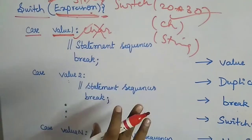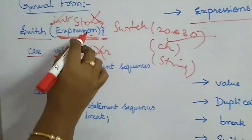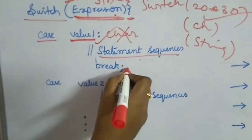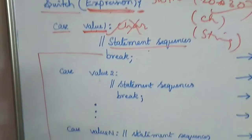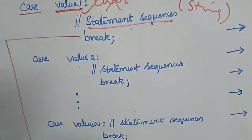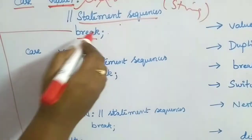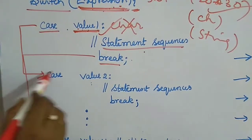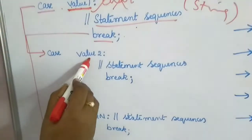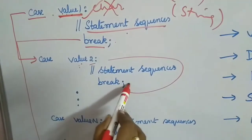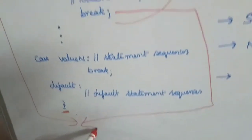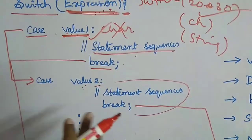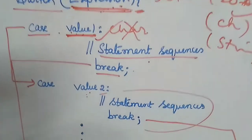Whatever expression you pass, it is matched with value one. If matched, that case's statement sequence executes. If a break is given, the control jumps completely out of the switch and the remaining cases are skipped. If not matched, the control moves to the next case and checks for equality again. Break is optional — it depends on your logic.